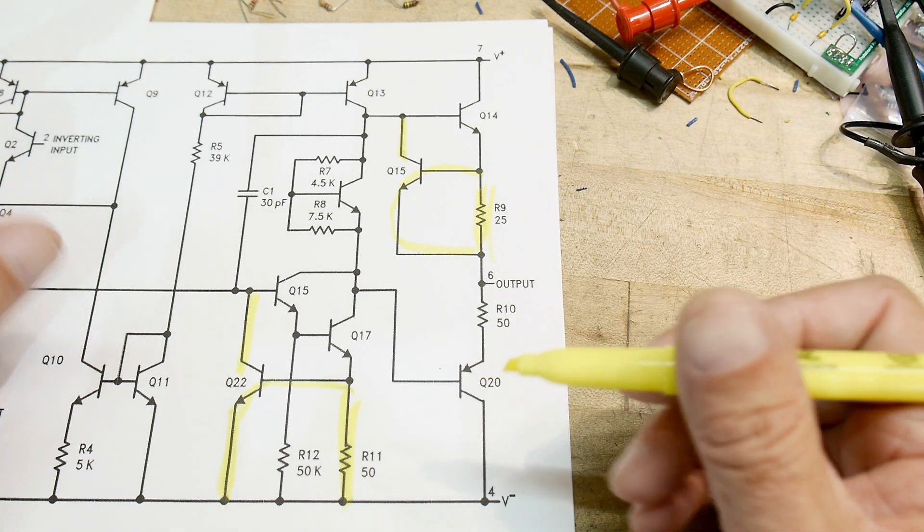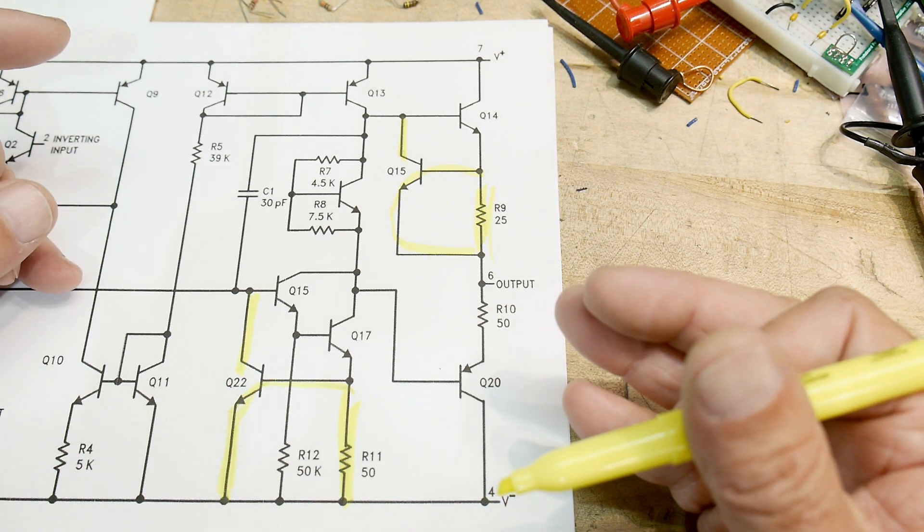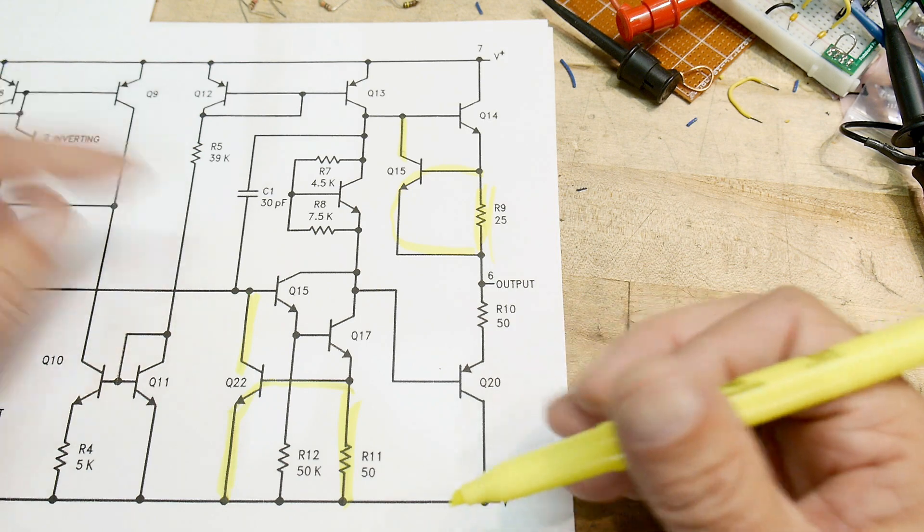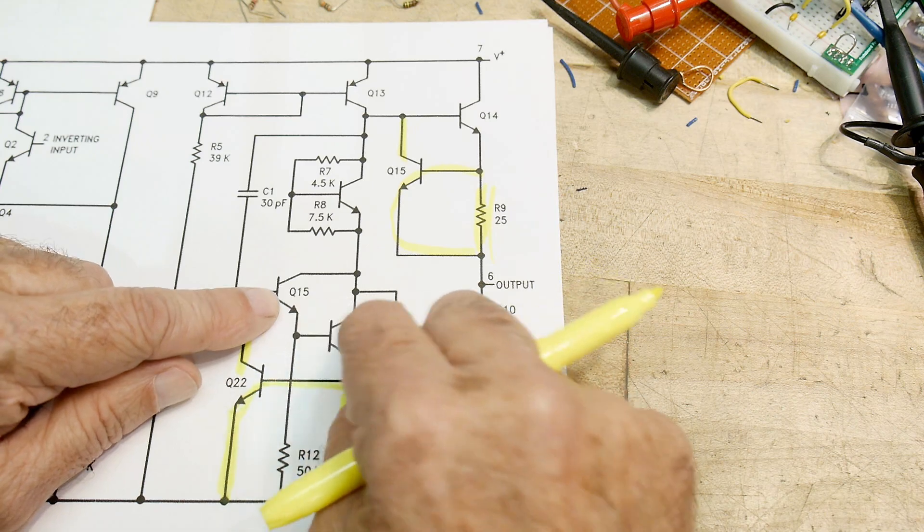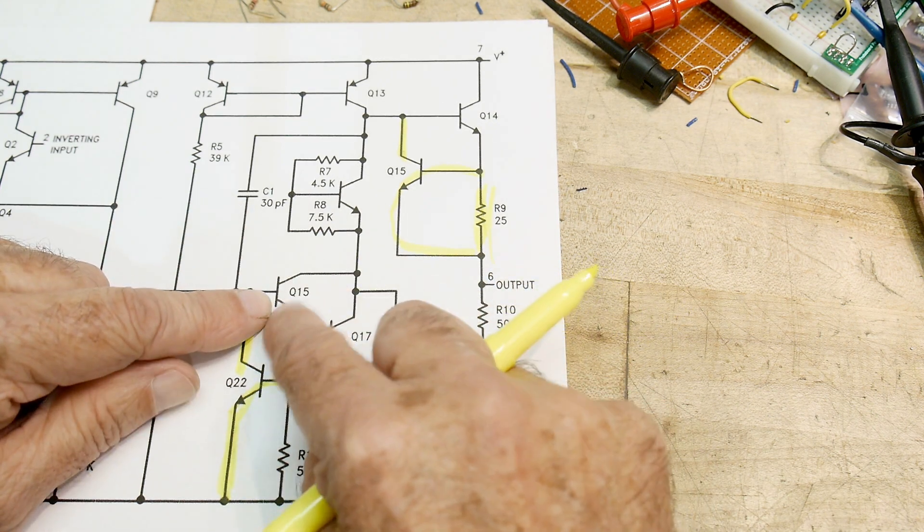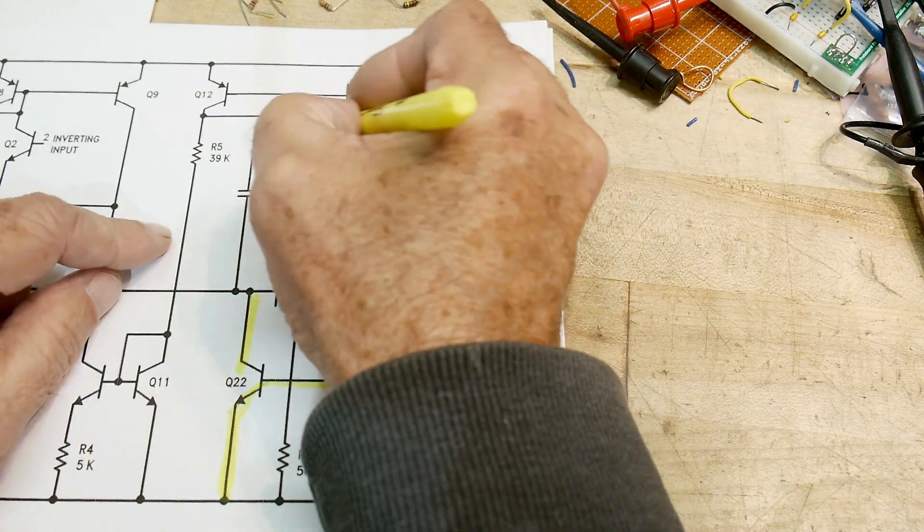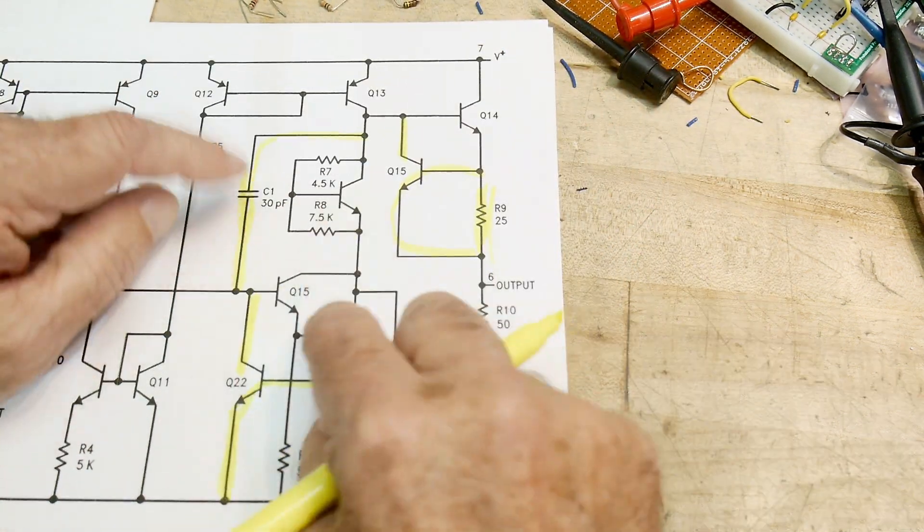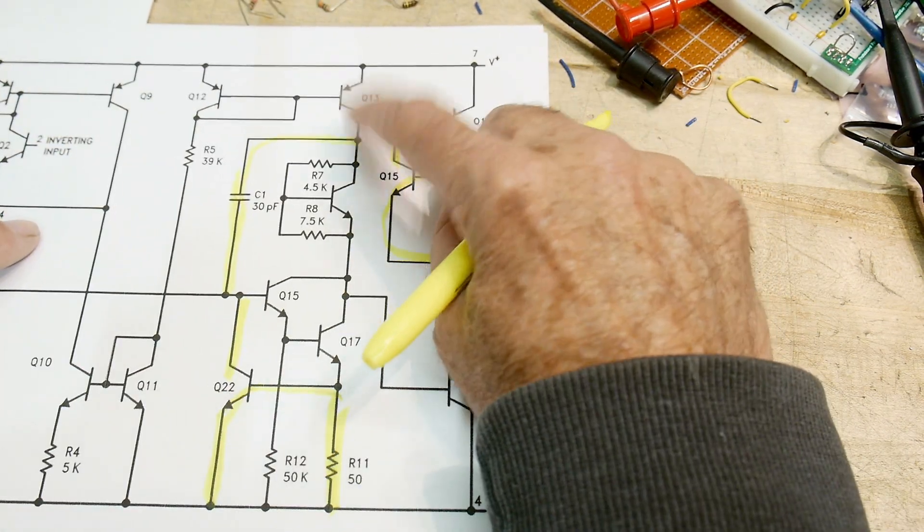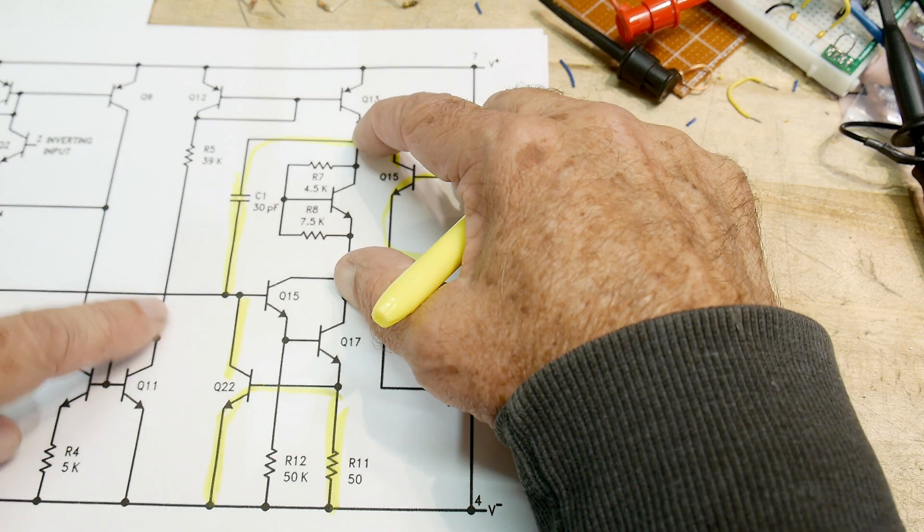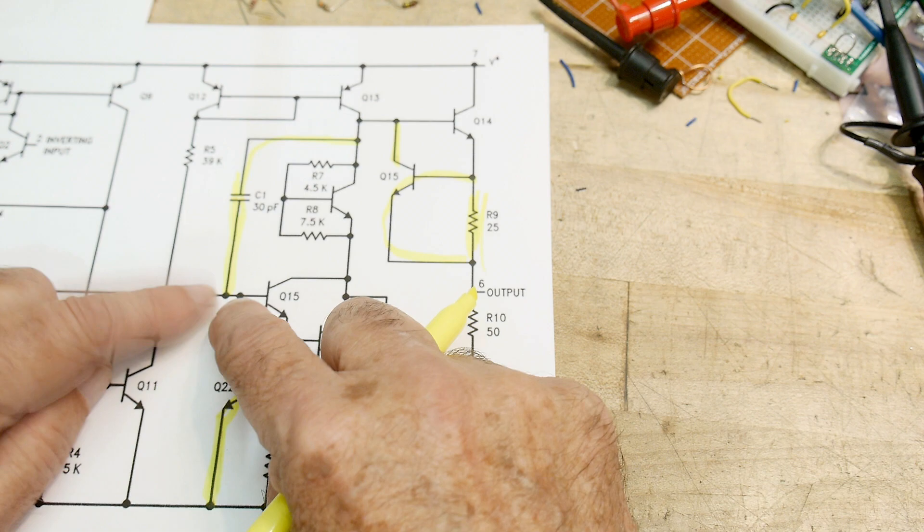In order for it to not oscillate, there is a frequency compensation, or this would be called a Miller capacitor. You're adding Miller capacitance to this Darlington here. You have this Darlington, and if you wanted to slow it down even more, then you would put in a capacitor across. Forget this is here, this is just an extra thing. But you will be able to slow down this circuit here by putting in that capacitor.